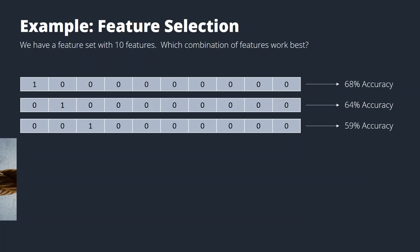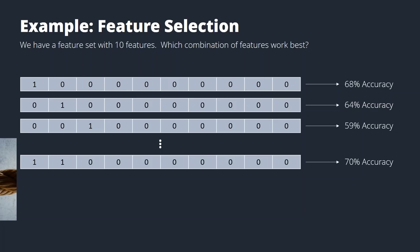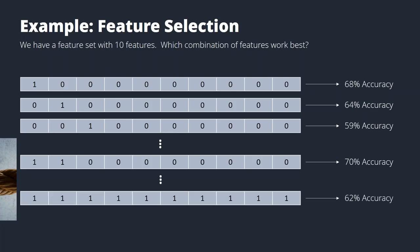Using all ten features together might only give 62% accuracy, which tells you it would be a good idea to use a subset. For example, using just two features might deliver much higher accuracy. Model training is also faster and the models are simpler and easier to understand. But as you can probably guess, going through all these combinations takes a lot of time. For 10 features, you have 2 to the power of 10 combinations — 1,024 different combinations. And for every combination, you need to do a tenfold cross-validation, meaning you train 10 different models. That's more than 10,000 models for only 10 features.